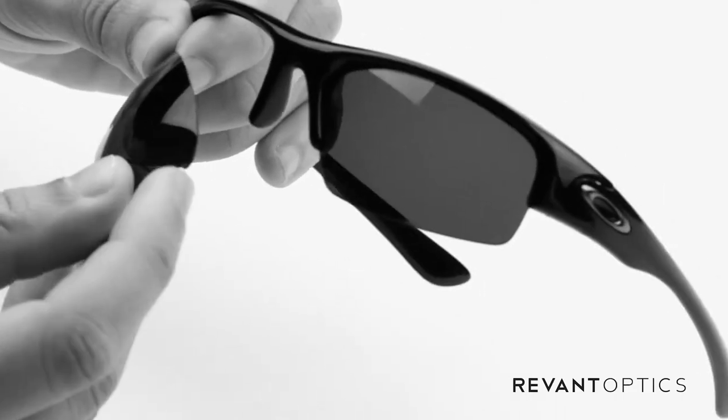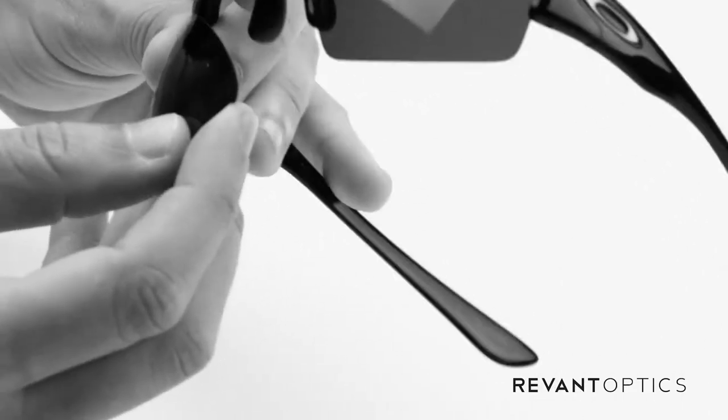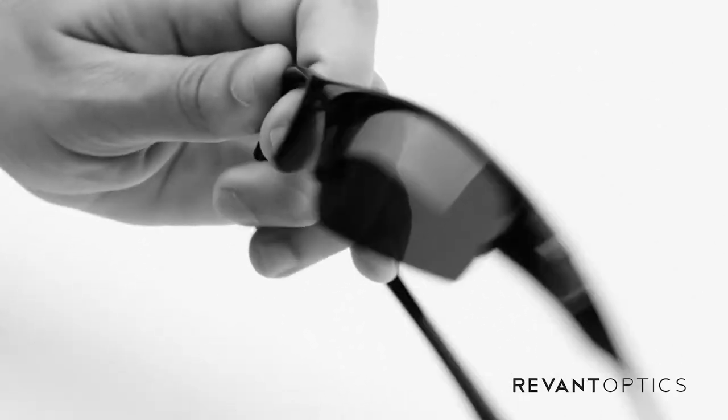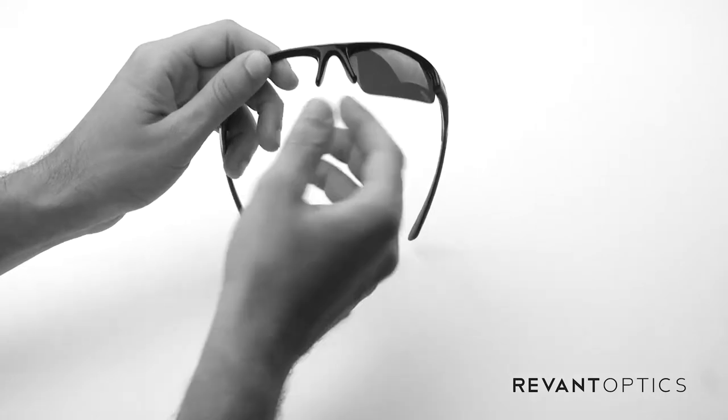You see it has grooves here on both sides, that is what holds the lens in place. The little notches actually hold it in place in the groove frame there.